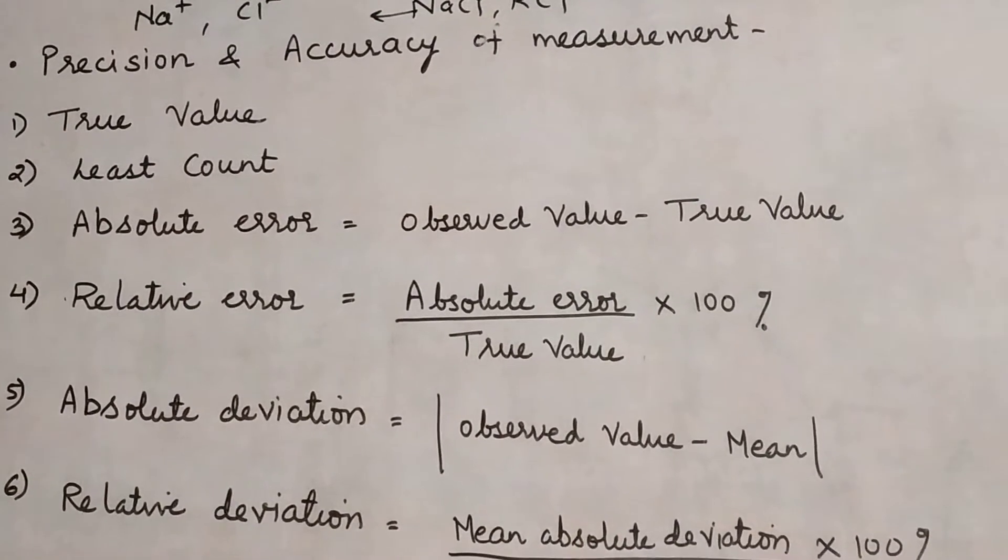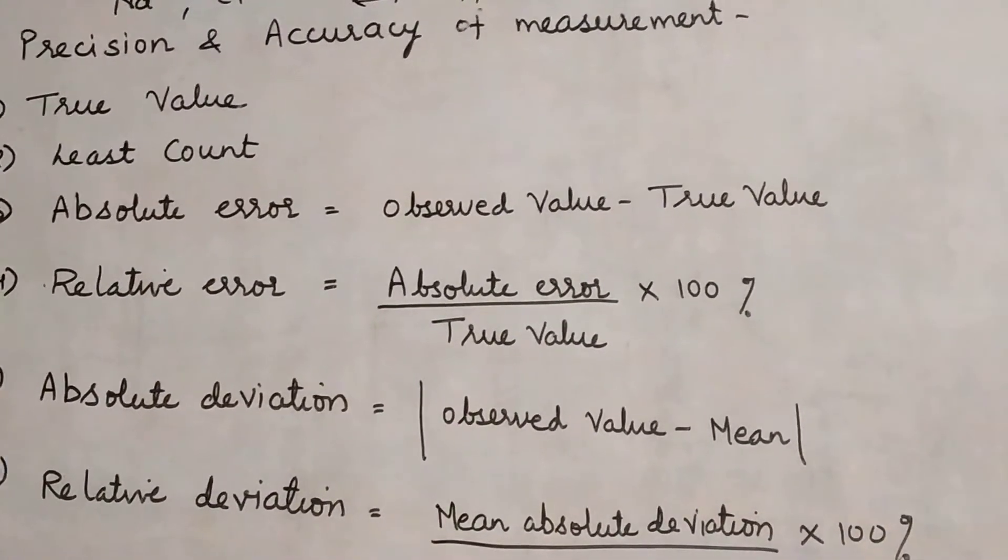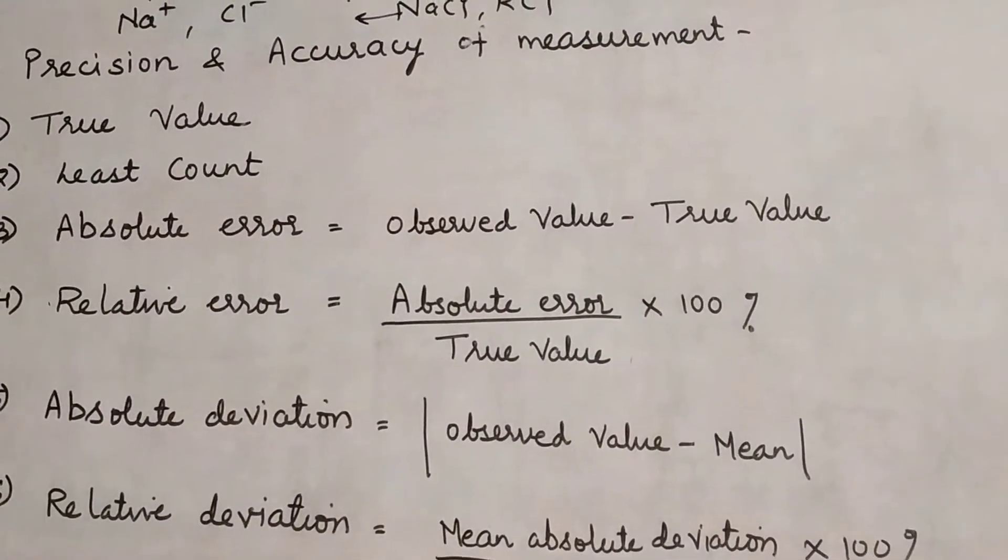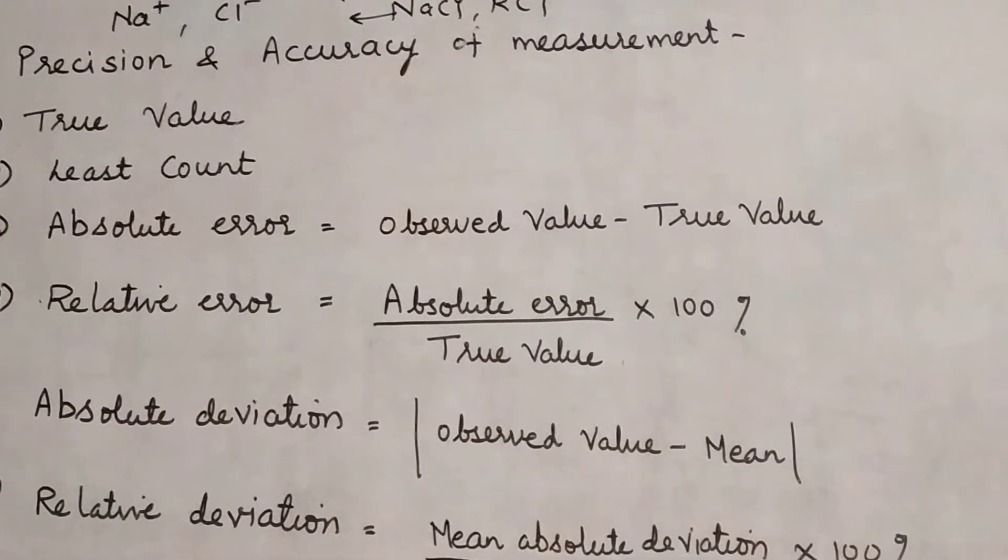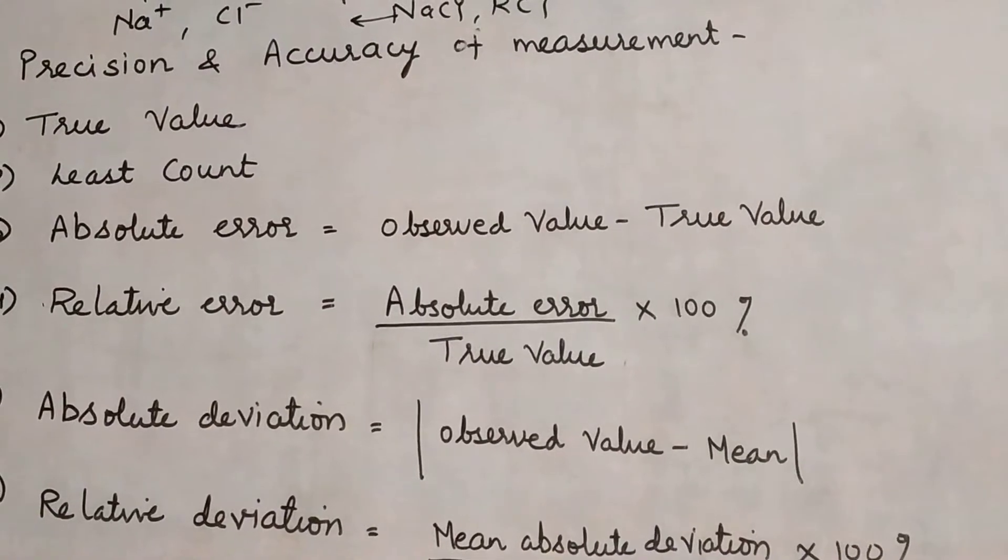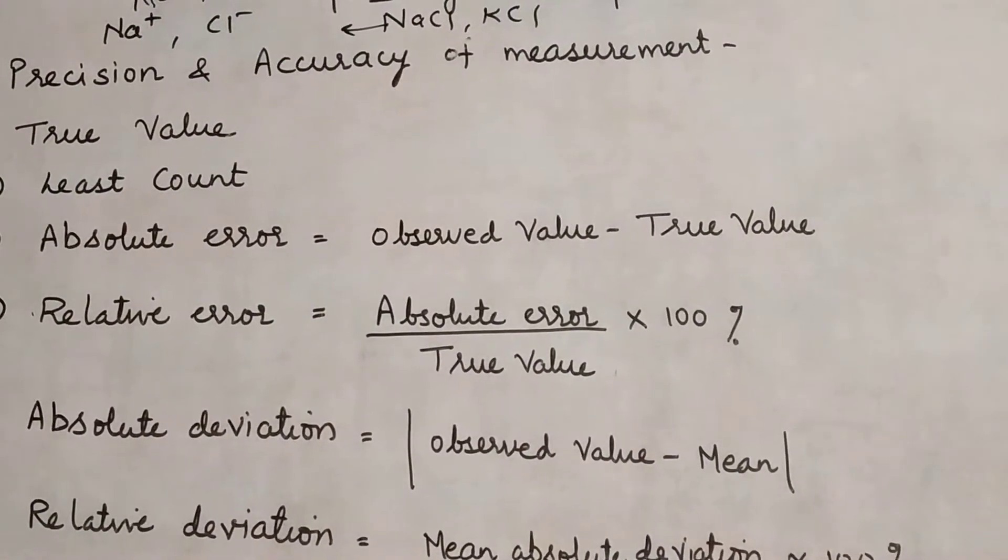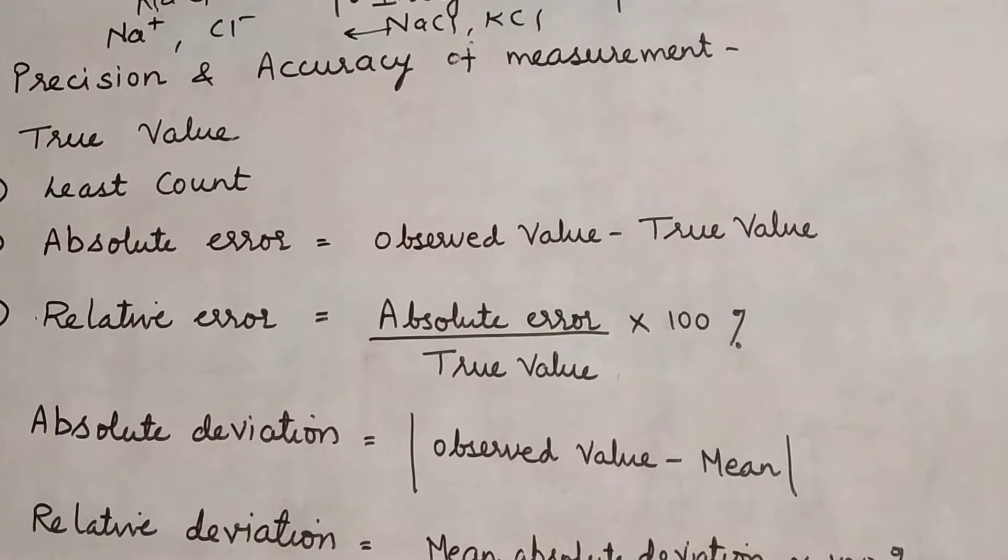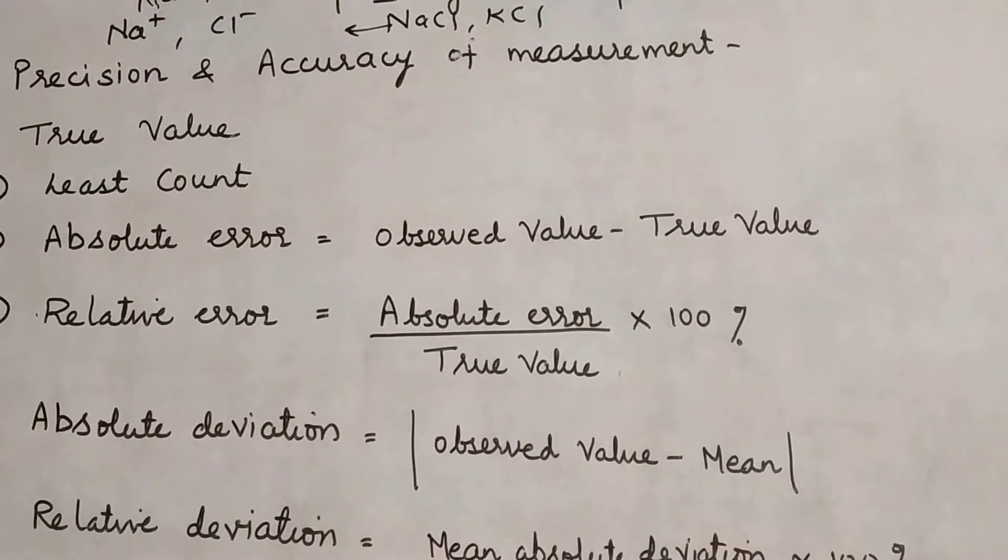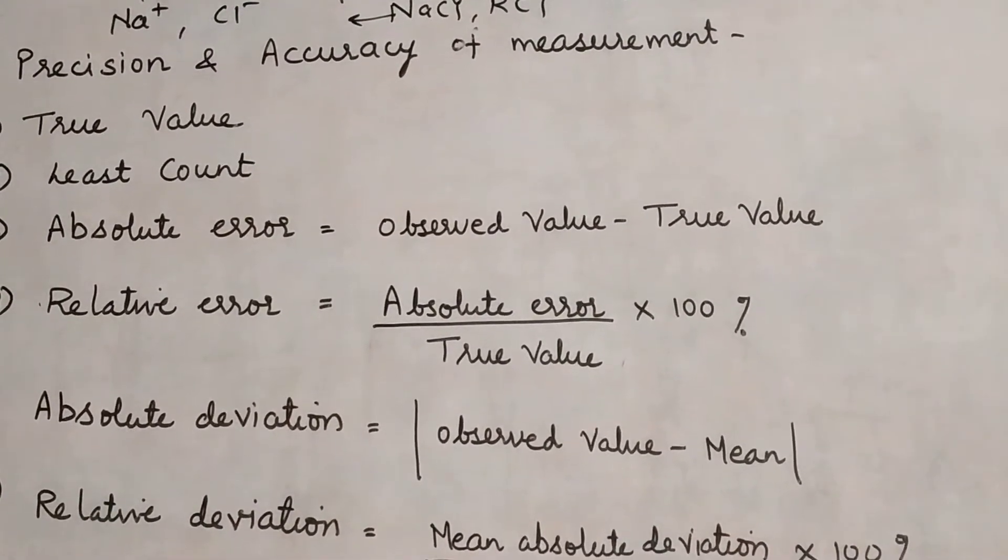We use an instrument called burette, we take readings from it. We find MP (melting point) of organic compounds practically in 11th. We find BP (boiling point). If such experiments had been done, then precision and accuracy of measurement - how accurate is the reading we obtained, the measurement we obtained?